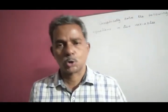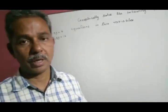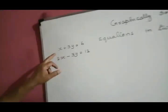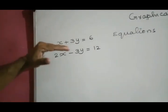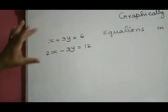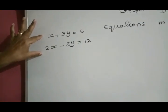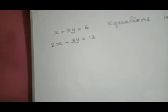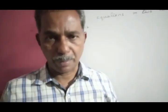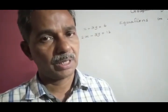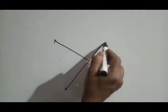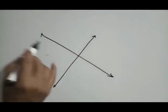How to solve a pair of linear equations in two variables graphically — you know that a linear equation in two variables graphically represents a straight line. Here we have a pair of linear equations in two variables, so graphically they represent a pair of straight lines. A pair of straight lines in a plane can be intersecting, parallel, or coincident.